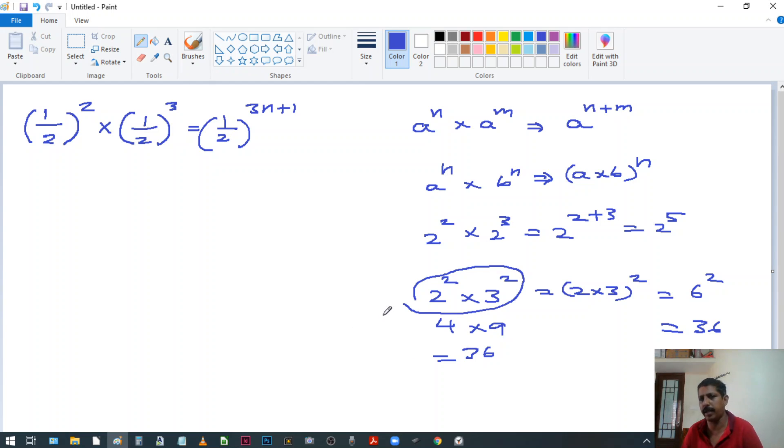So using that thing, when you get a problem you keep the bases same and add the powers. That is one method. Another method is what? If the bases are different and if you see the powers are same, then you can multiply and do it like this one. 6 raised to 2.